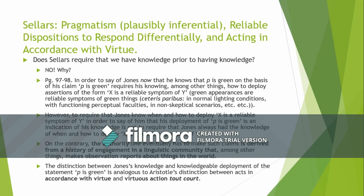For example: green appearances are reliable symptoms of green things, all else being equal — that is, in normal lighting conditions, with functioning perceptual faculties and non-skeptical scenarios. So Sellars' point is that for you to be in an epistemically privileged position to assert with knowledge that something is green requires a whole host of other concepts and knowledge, including understanding which conditions are normal, and the conditions for when you should apply the general form 'X is a reliable symptom of Y.'